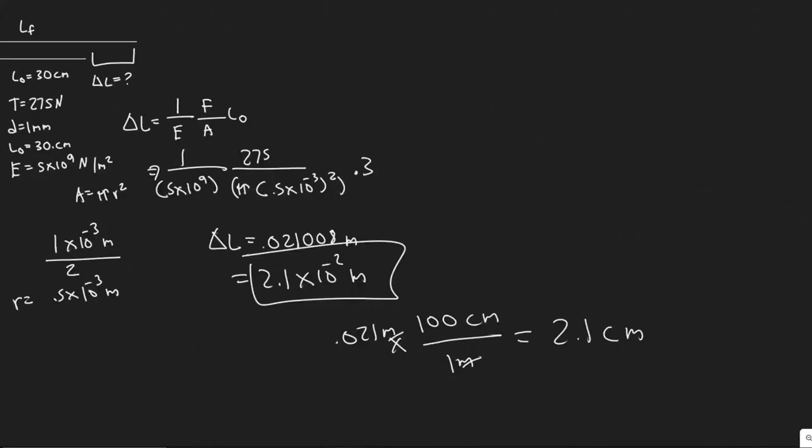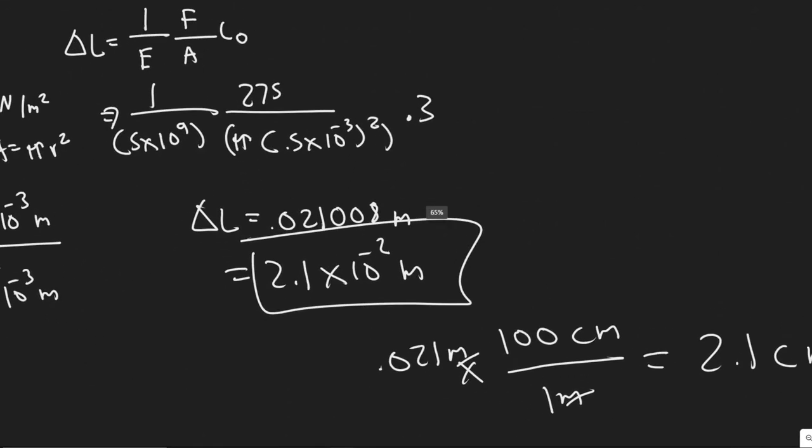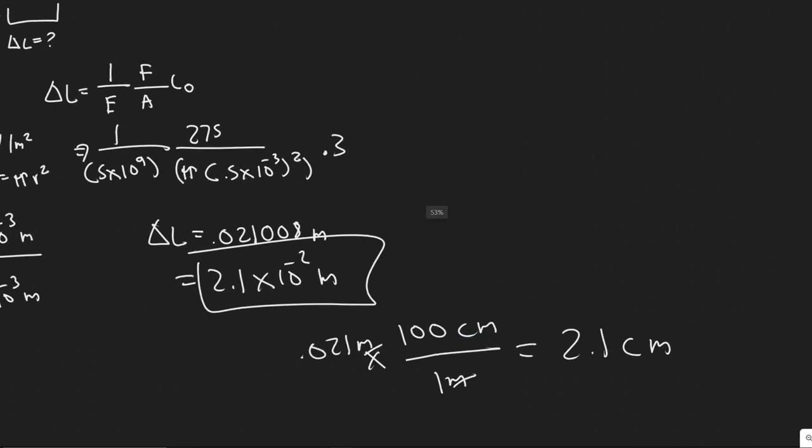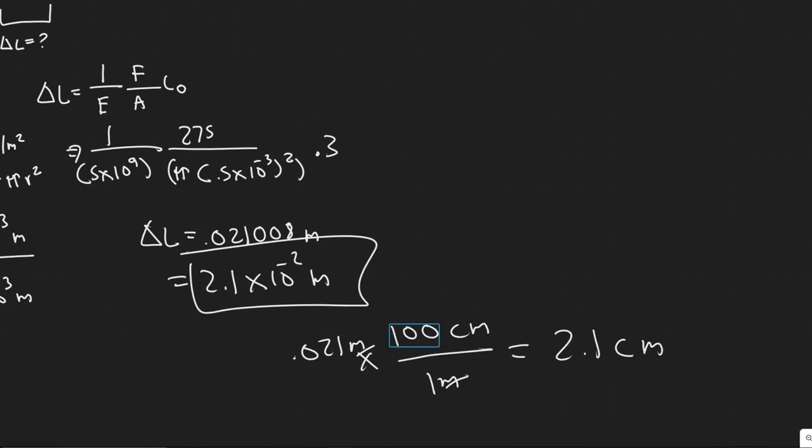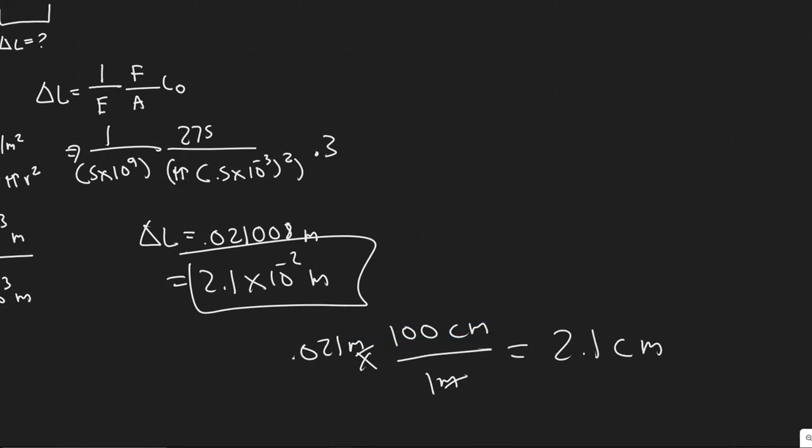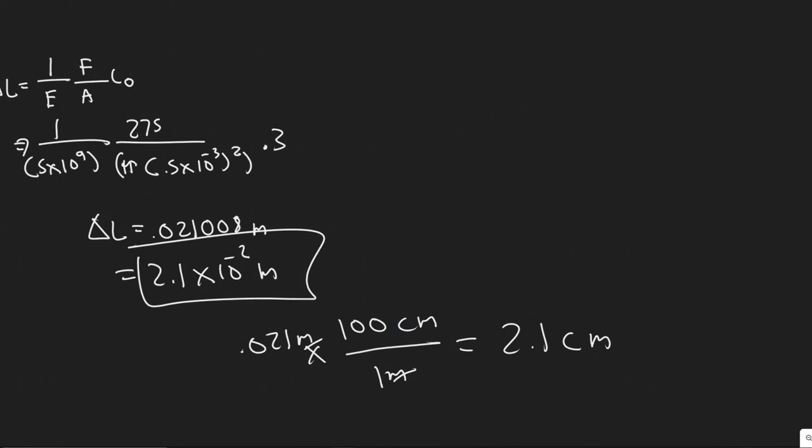You're going to get, okay, yeah, so when you plug this in, you're going to get 2.1 times 10 to the minus 2 meters. You can leave it in meters if you'd like, or you can convert it into centimeters. So to convert it to centimeters, you just multiply it by 100, because there's 100 centimeters for every meter. And you're going to get it's 2.1 centimeters.